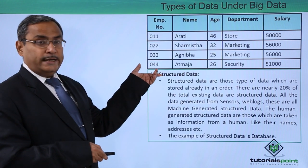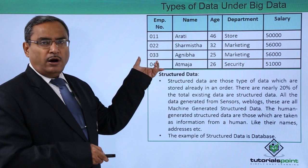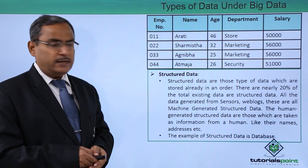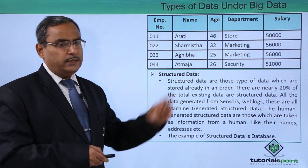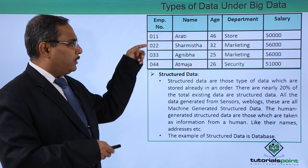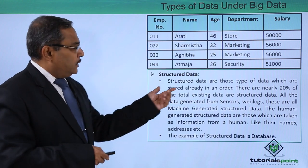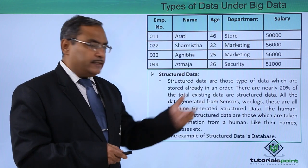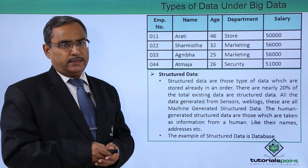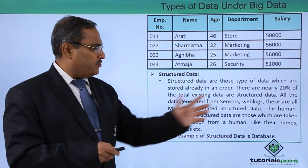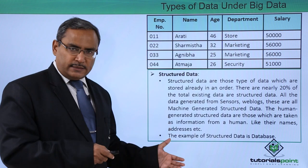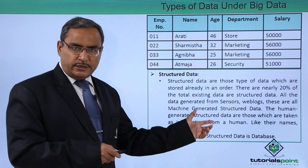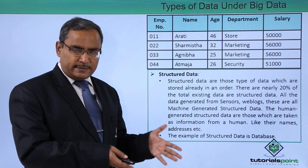This database is a good example of structured data. We are having certain columns: employee number, name, age, department, and salary, and here we are having the respective rows containing the information — records and columns. Structured data are stored already in an order and account for nearly 20 percent of total existing data. Data generated from sensors, web logs, and other machines are machine-generated structured data.